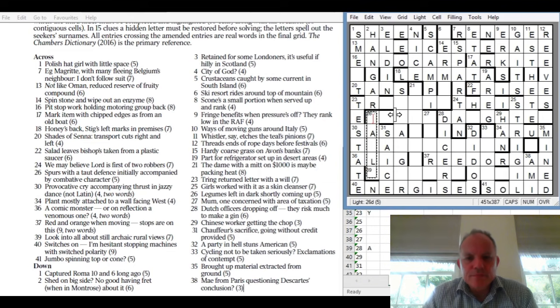26 down: Legumes left in dark shortly coming up. Left in some word for dark but cut off at the end and going upwards. Could it be KALES? That might not be TRANSACTION going across, but it would fit so well with STRANGER. 27 down probably with an A in the middle: Mum, one concerned with area of taxation. The whole definition is concerned with area of taxation.